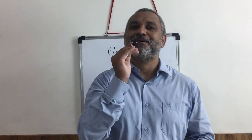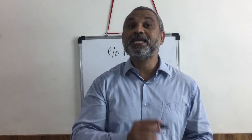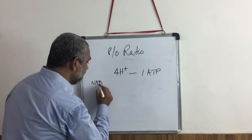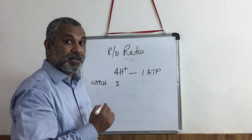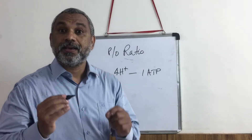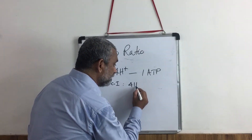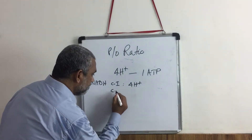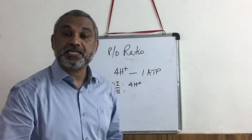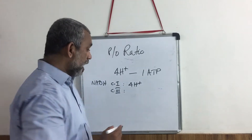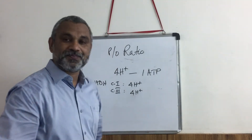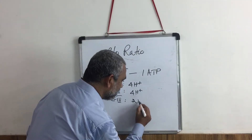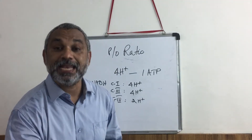Go back to your lessons on electron transport chain. If you begin with an NADH, you know that in complex number 1, there are 4 protons transported. Complex number 2, nothing. Complex number 3 will also transport another 4 protons. Complex number 4 will transport 2 protons. This is the case of an NADH.